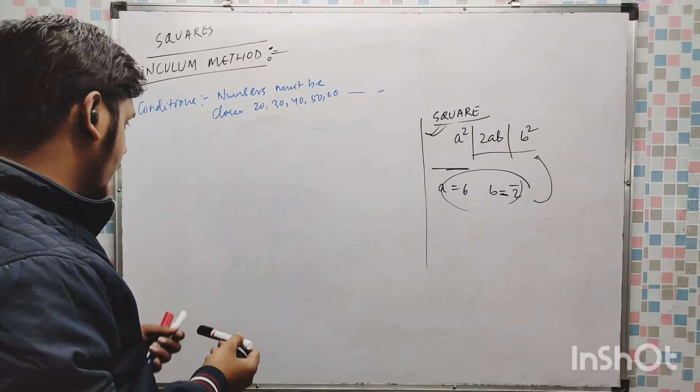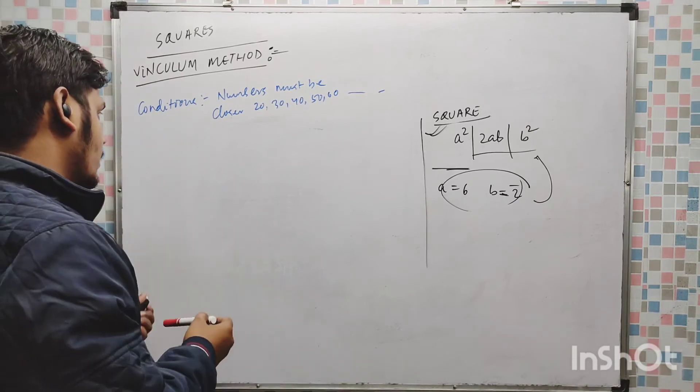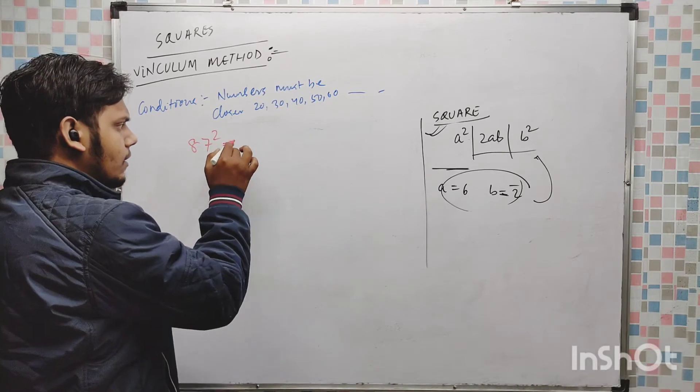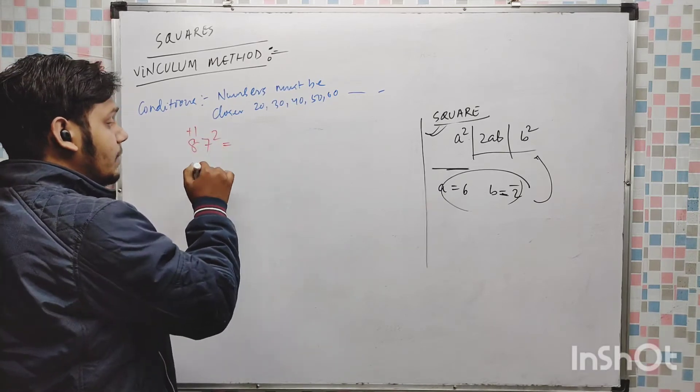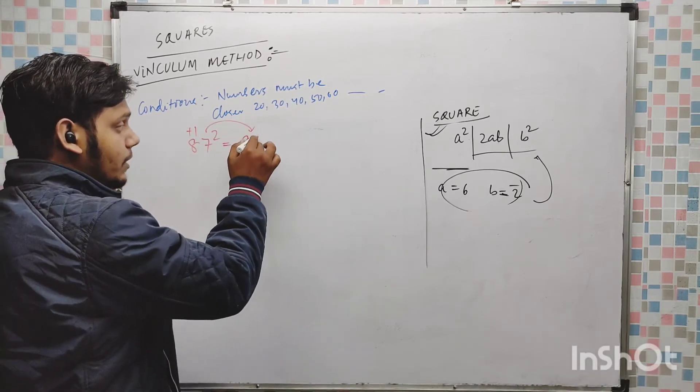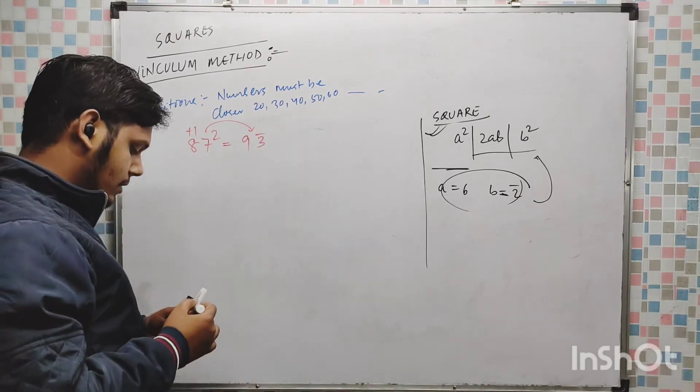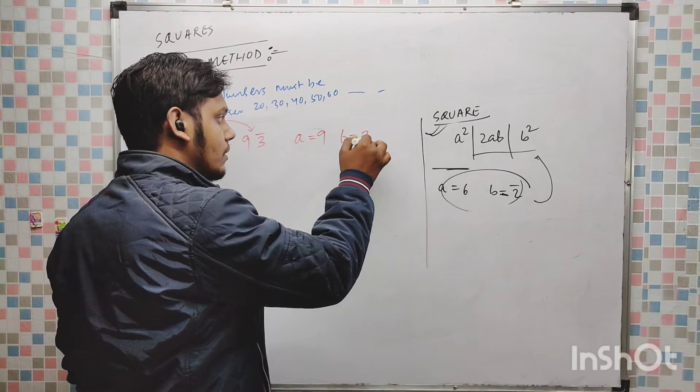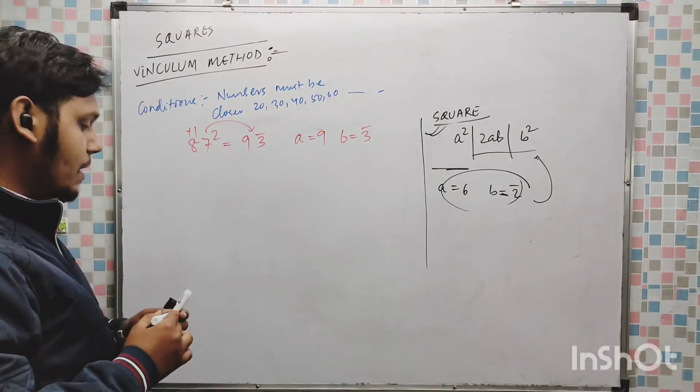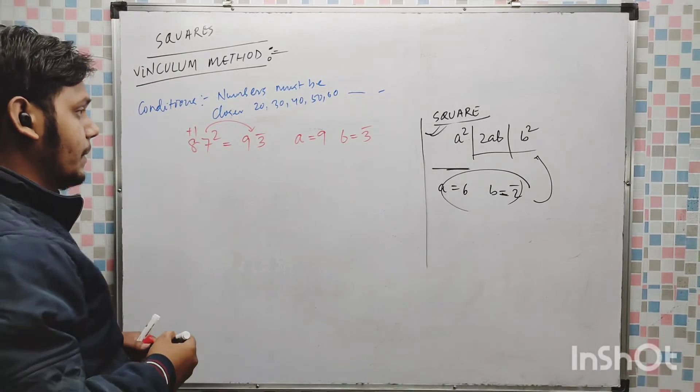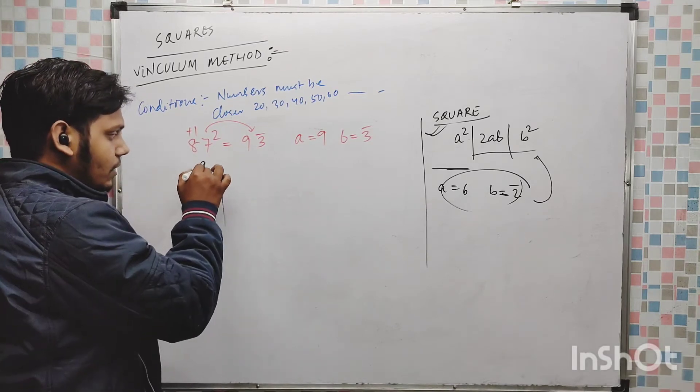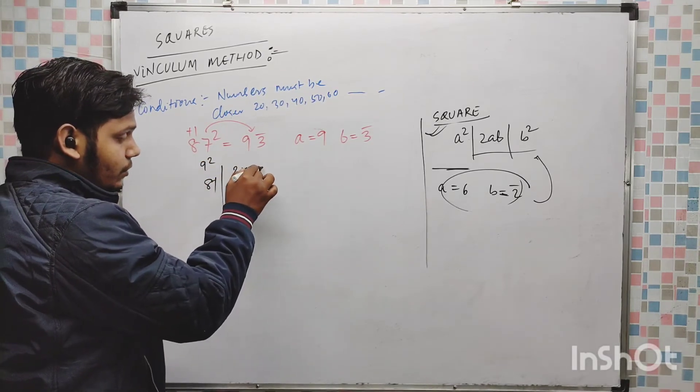Suppose it is 87 square. So 8 plus 1, 9, 7 complement 3 bar. Now your A is 9, B is 3 bar. Now you have to use the formula, 9 square, 81.